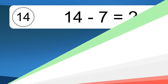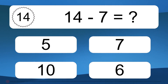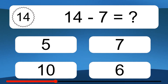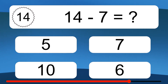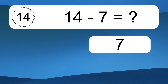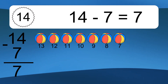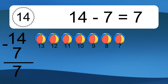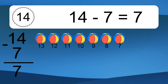14 minus 7 equals what? 14 minus 7 equals 7. Let's count it: 13, 12, 11, 10, 9, 8, 7.